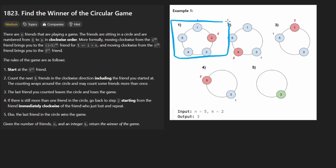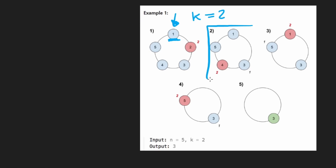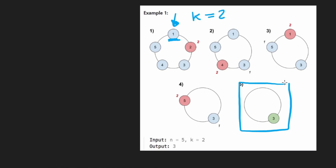We're playing a game where we have five people sitting in a circle, numbered from one through five in order, and we're given an integer k — in this example, it's two. We start at person one always, travel a distance of k minus one, and eliminate the person at that position. After that person has been eliminated, we move to the next person and repeat. We keep going until only a single person is remaining — in this case, that person was three, and then we return them.